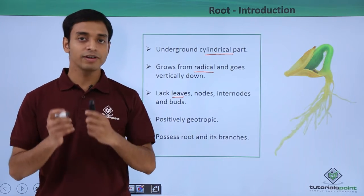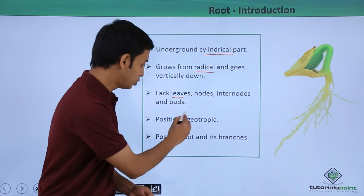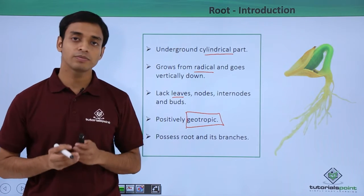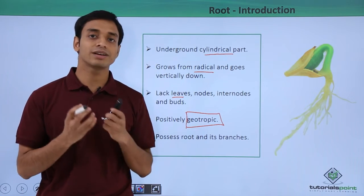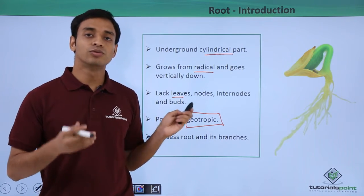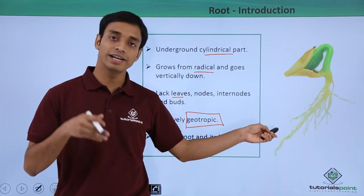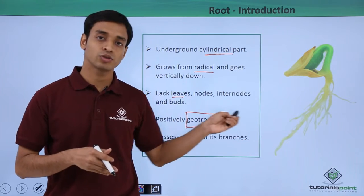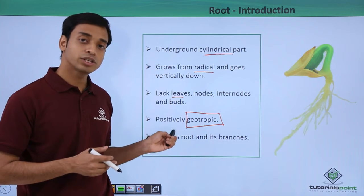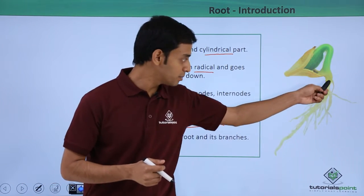A very important characteristic of roots is that they are positively geotropic. Geo means earth, so they like to move towards the earth — they move underground into the soil. They also possess a main root and branches, as you can see here.